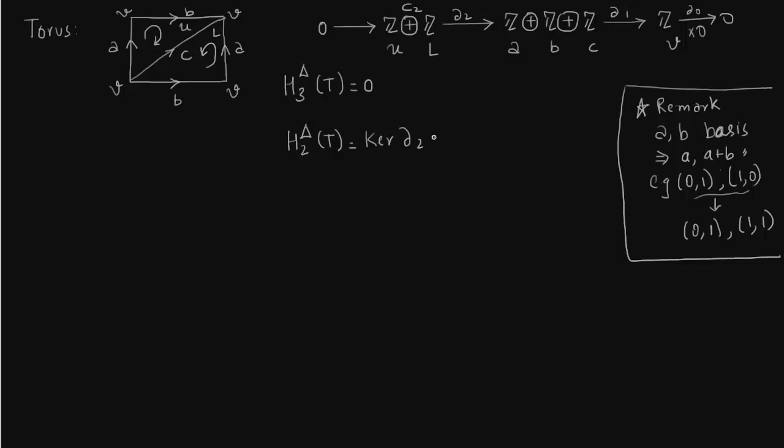So we need to describe the elements of H_2. We have to start with elements of C_2. What do elements of C_2 look like? We have seen that C_2 is generated by upper and lower triangle, so the elements are of the form p·U + q·L, where p and q are integers.